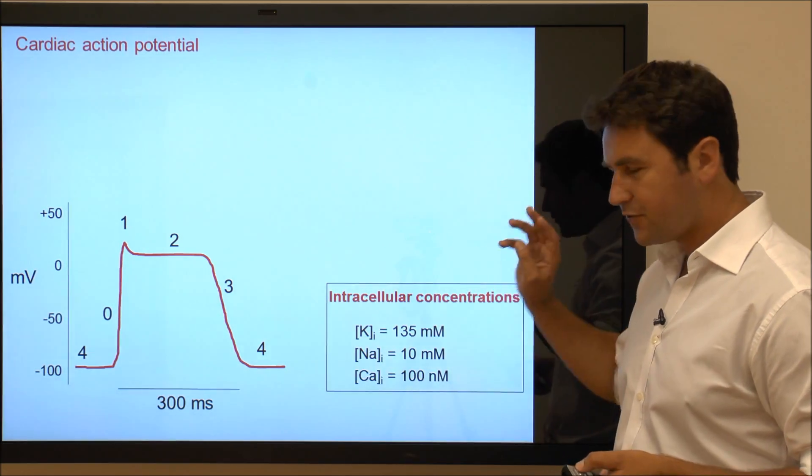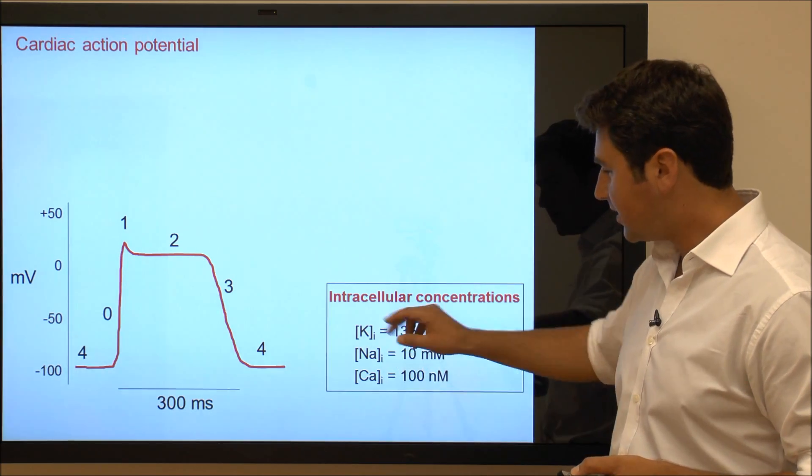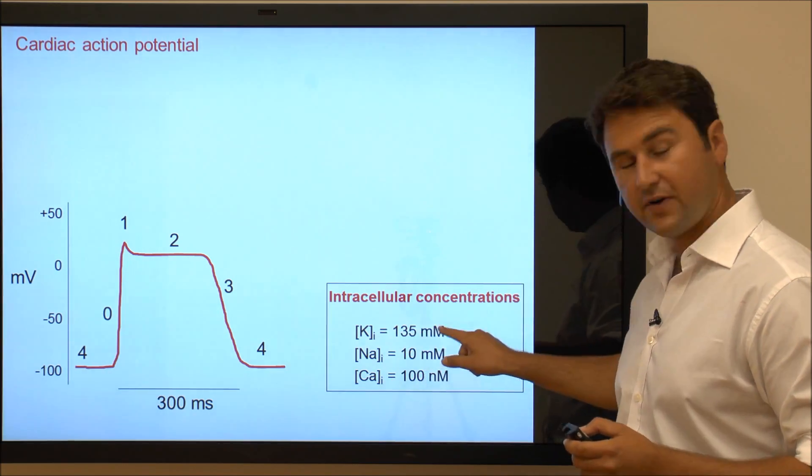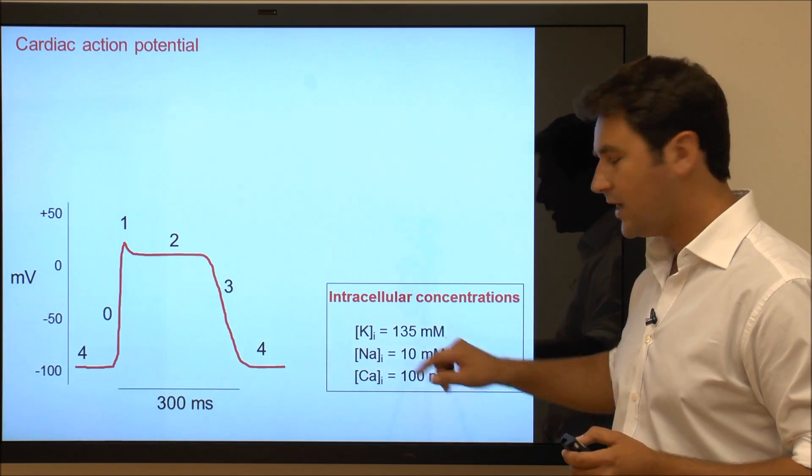It's also important to emphasize that there are three major ions that regulate the cardiac action potential: primarily potassium with very high concentration intracellularly, then sodium, and then calcium.